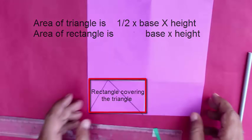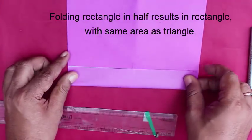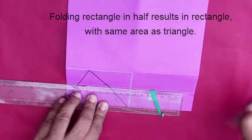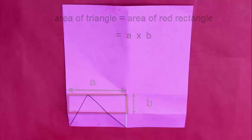So if we divide this rectangle in half, we will get a rectangle whose area is same as the area of the triangle. This rectangle of length a, height b has the same area as our triangle a times b. Now we will convert this rectangle to a square.